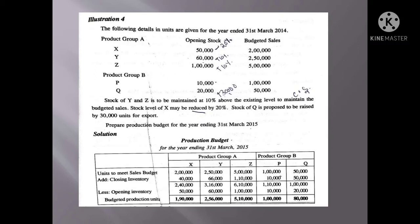To find the production budget, we add closing stock to budgeted sales and deduct opening stock. There is no normal wastage in this problem. We fix the closing stock accordingly: Y and Z stocks are raised by 10% above existing levels, stock of P is raised by 20% above existing level, and stock of Q is raised by 30,000 units to 35,000 units.